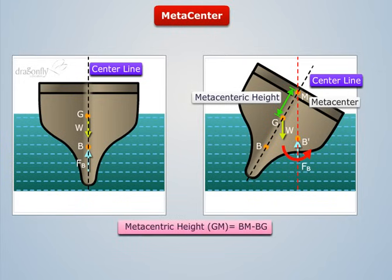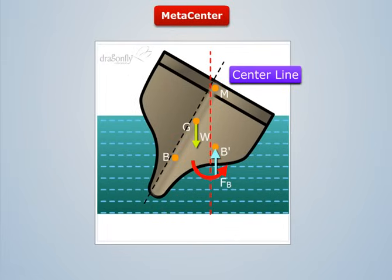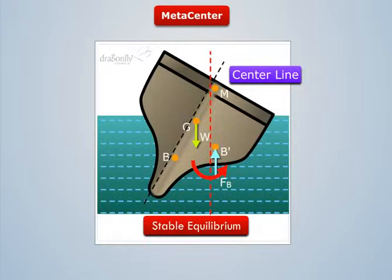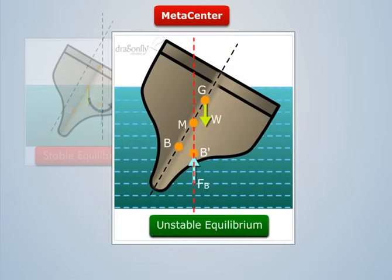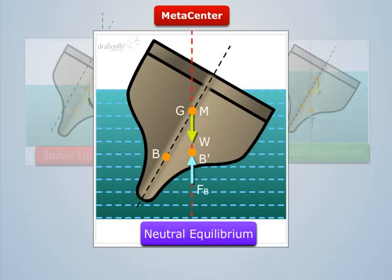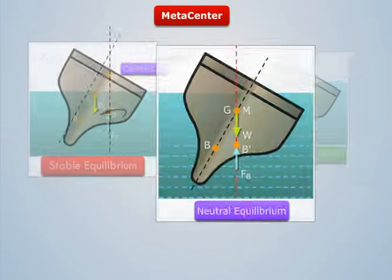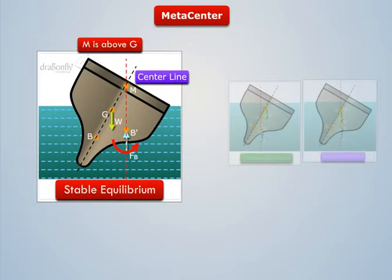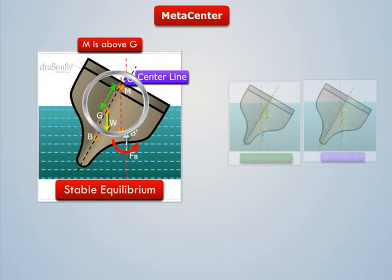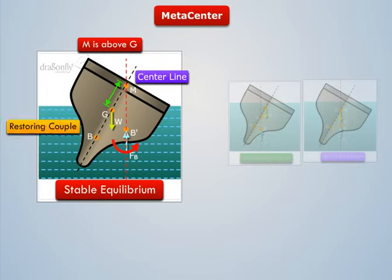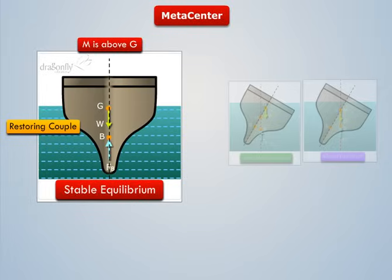Depending upon the location of the metacenter, a floating body possesses three types of equilibrium: stable, unstable, and neutral equilibrium. When M is above G, a restoring couple is formed by the buoyancy force and the weight of the body, which tends to turn the body back to its original position. Thus, the body is said to be in stable equilibrium.